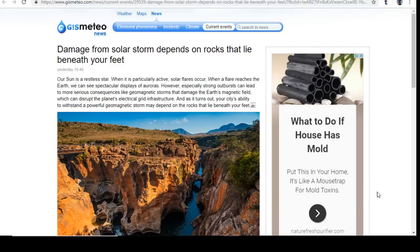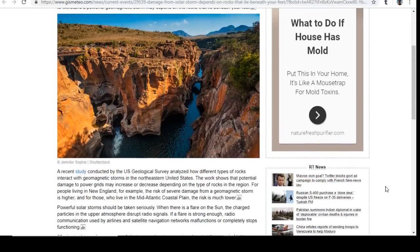A recent study by the USGS analyzed how different types of rocks interact with geomagnetic storms in the northeastern United States. The work shows that potential damage to power grids may increase or decrease depending on the type of rocks in the region. For people living in New England, the risk of severe damage from geomagnetic storms is higher, while those in the mid-Atlantic coastal plain face much lower risk.